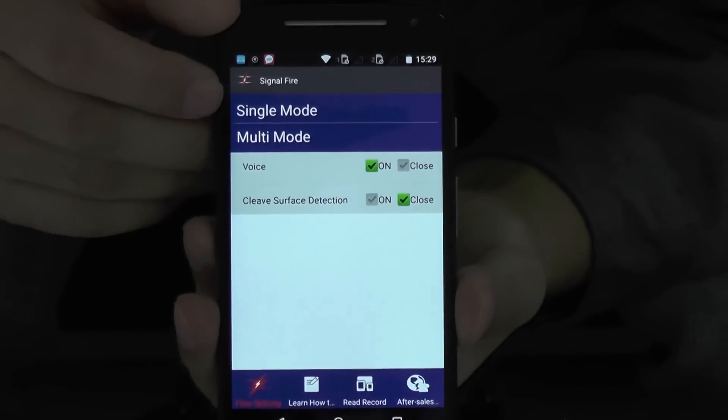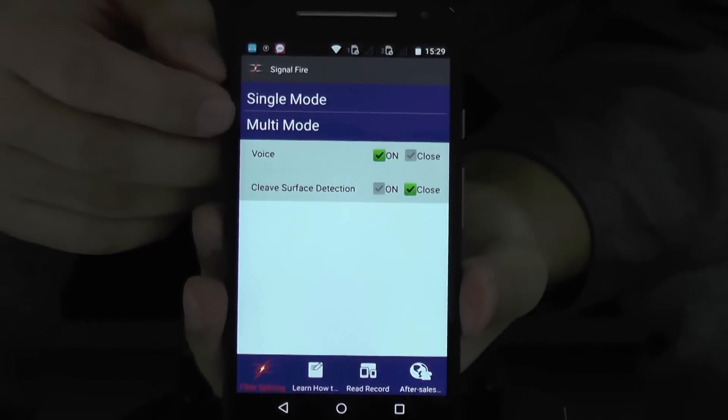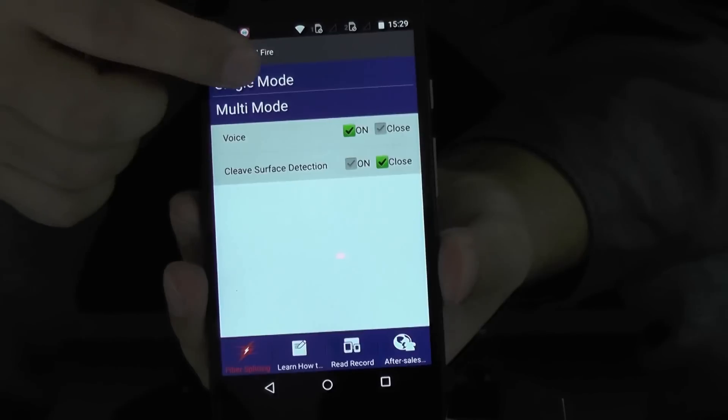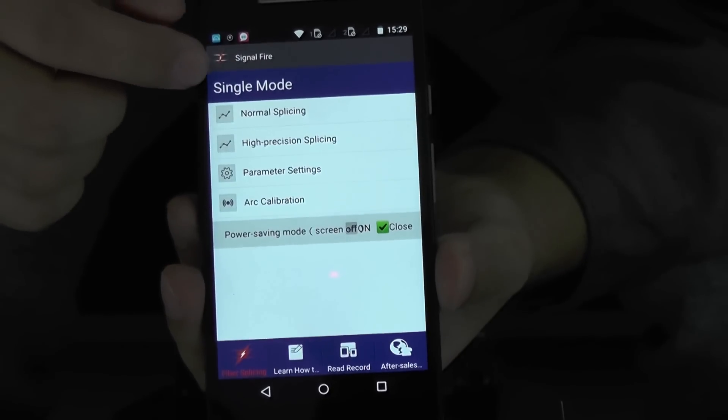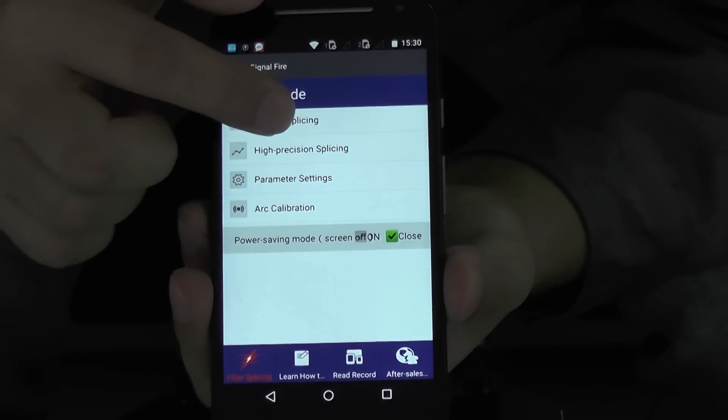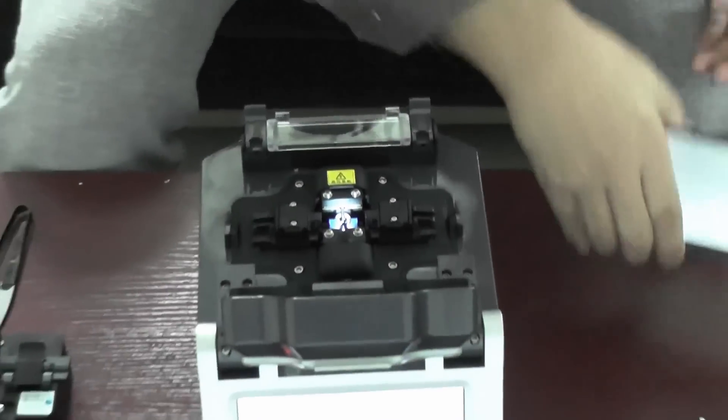Here, single mode and multiple mode. Then I will use the single mode fiber. So I choose this one. Usually we use the normal splicing. Normal splicing. All right, let's do it.